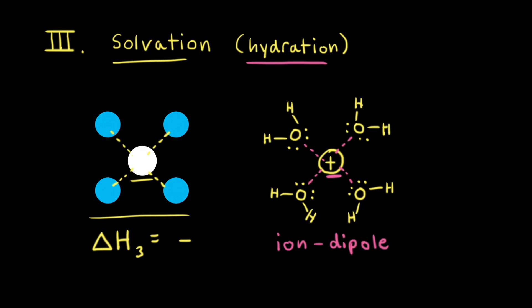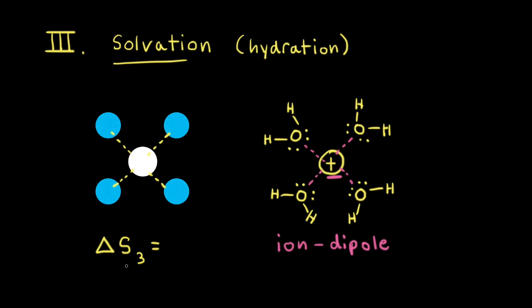One way to think about why this is negative is to consider the ion-dipole interactions: since it would take energy to break these ion-dipole interactions, when those ion-dipole interactions form, energy must be given off. Now let's think about the change in entropy, delta S-3, for the third step. Because the water molecules are attracted to the ions in solution, the water molecules have a decreased freedom of movement. Therefore, there are fewer positions possible for the water molecules — a decrease in the number of possible positions means a decrease in the number of microstates, which means a decrease in entropy. Therefore, delta S-3 is negative.